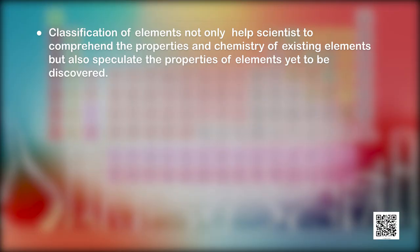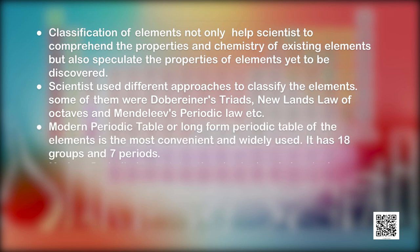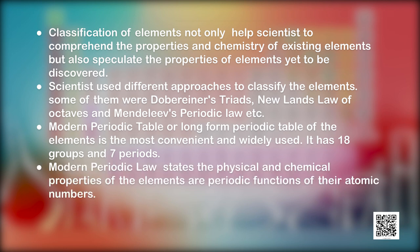Let us recapitulate what we have learnt so far. Classification of elements not only helps scientists comprehend the properties and chemistry of existing elements but also allows speculation about properties of elements yet to be discovered. Scientists used different approaches to classify elements: Dobereiner's Triads, Newlands' Law of Octaves, and Mendeleev's Periodic Law. The modern periodic table — the long form — is the most convenient and widely used, with 18 groups and 7 periods. The modern periodic law states that physical and chemical properties of elements are periodic functions of their atomic numbers.